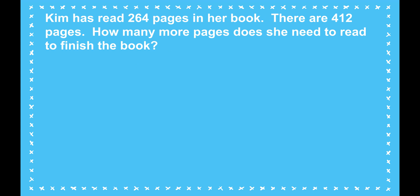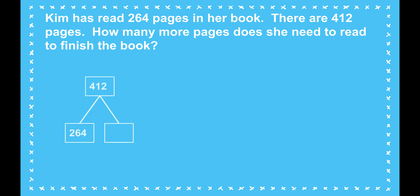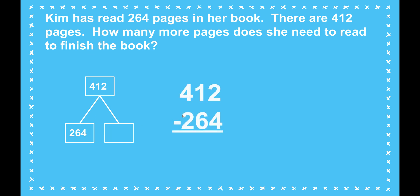The best model that helps me visualize this is the math mountain. She's got 264 — that's only part. I don't know the other part, but I know the total. When I'm missing a part and I have the total and a part, I can subtract. So I'm going to line up my place values and subtract.